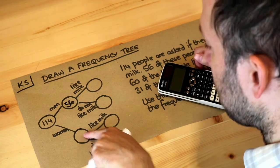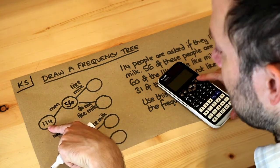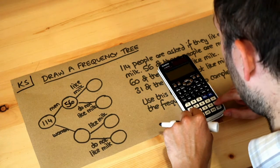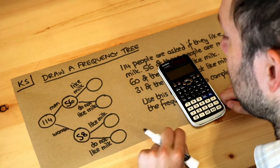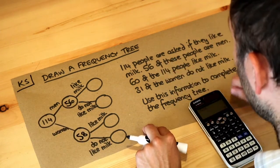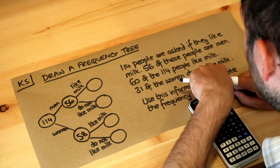And because we know men plus women adds up to the number on the left, the total number of people, we can do 114 minus 56, which is 58. So now these two numbers add up to 114. We're also told that 31 of the women do not like milk.